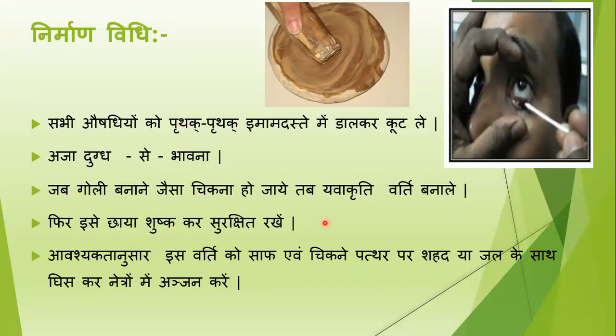— tab aapne uski chhoti chhoti yavakruti ki vartiyan banani hain. Yavakruti means jaise jau hoti hai, dono side se pointed, aur beech mein se thodi si moti — aisi aapko yavakruti ki vartiyan banani hain. Aur phir aapko usse chhaya mein sukhana hai. Aur avashyakta anusar, is varti ko saaf aur chikne pathar par shahad ya fresh jal ke saath bhizkar, neetra mein anjan karna hai — anjan arthat aapko neetra mein kajal ki tarah usse lagana hai.